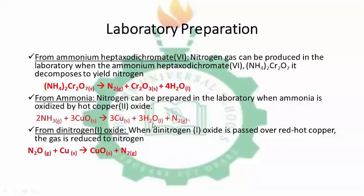The copper is reduced from 2+ to 0 — when you calculate the oxidation number of copper in the copper(II) oxide it is 2+, but in the product copper it is 0. The oxidation number of nitrogen in ammonia increases from minus 3 to 0, showing that nitrogen is oxidized. So ammonia is the reducing agent while hot copper(II) oxide is the oxidizing agent.